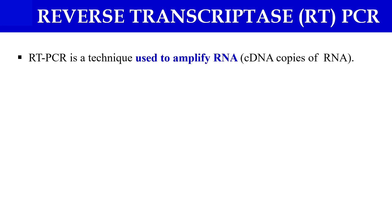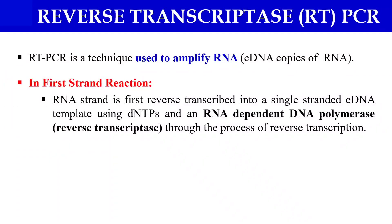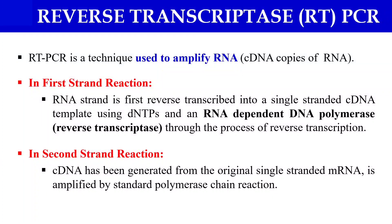So how can we do this? First of all, in the first reaction, we have to convert our RNA into cDNA by using the enzyme reverse transcriptase — that is why it is named the reverse transcriptase enzyme. The RNA will be converted into cDNA, that is complementary DNA. And in the second strand reaction, this cDNA will be amplified by normal polymerase chain reaction, that is PCR. So reverse transcriptase PCR is simply the PCR of RNA, in which we amplify the RNA.